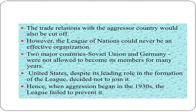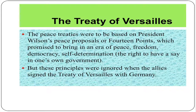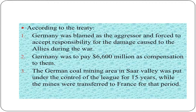When aggression began in the 1930s, the League failed to prevent the Second World War. The peace treaties were to be based on President Wilson's peace proposals, or the 14 Points, which promised to bring an era of peace, freedom, democracy, and self-determination — the right to have a say in one's own government. But these principles were ignored when the Allies signed the Treaty of Versailles with Germany. According to the treaty, Germany was blamed as the aggressor and forced to accept responsibility for the damage caused to the Allies during the war.